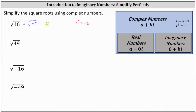16 actually has two square roots: positive four and negative four. The principal square root notation is used when we want the positive square root. If we wanted the negative square root of 16, the notation would be negative square root of 16, which gives us negative four as the negative square root of 16.